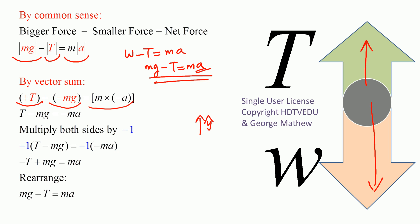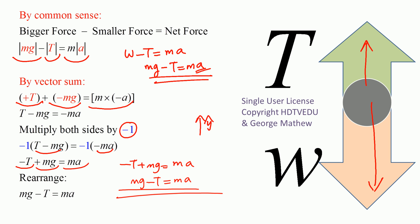We get T minus mg equals negative ma. Multiplying both sides by negative 1 and distributing: negative T plus mg equals ma, which is the same as mg minus T equals ma. Both methods confirm the same equation of motion.